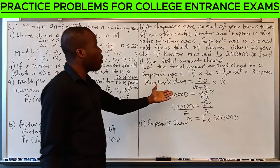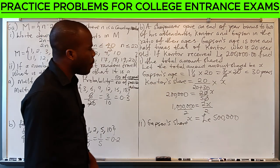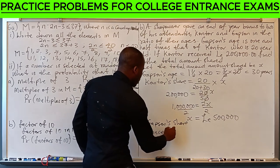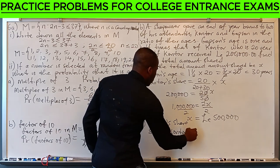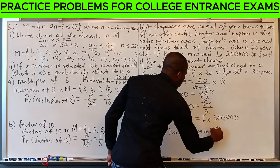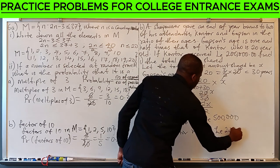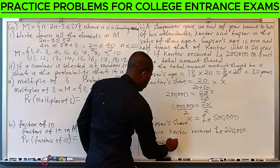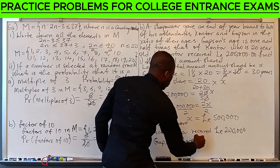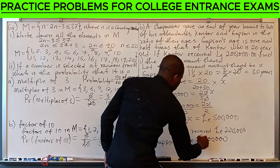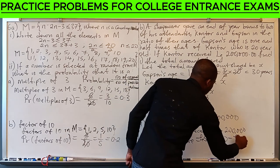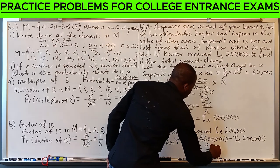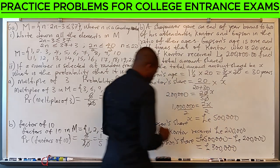Gapsen's share is straightforward. Since Cantor received 200,000 Egyptian pounds, Gapsen's share will be 500,000 minus 200,000 Egyptian pounds, which is 300,000 Egyptian pounds.